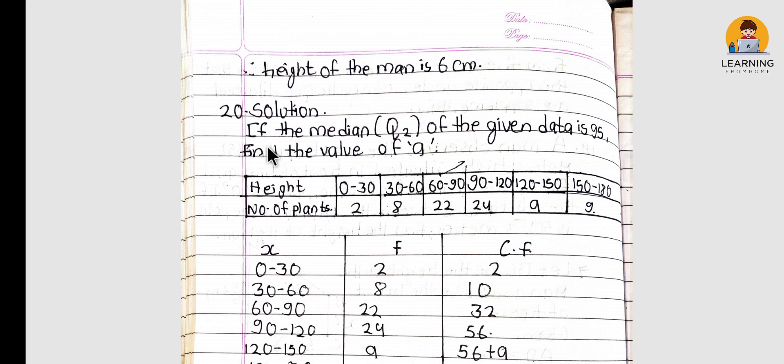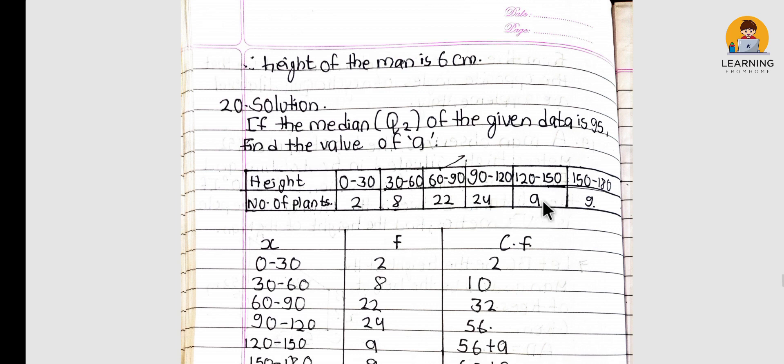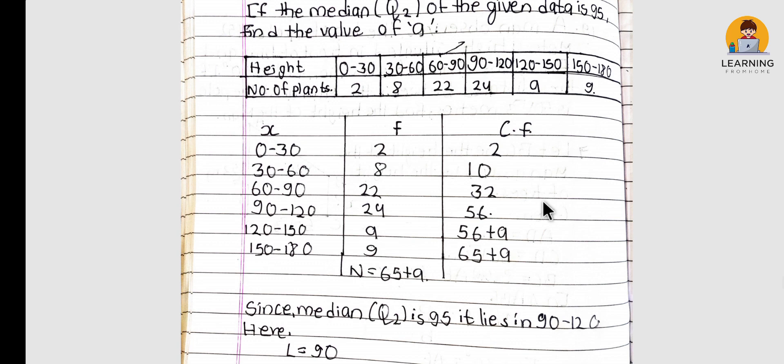If the median of the given data is 95, find the value of A. This is a straightforward question.